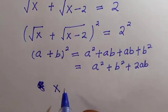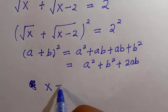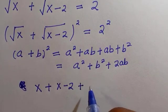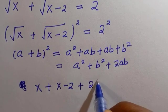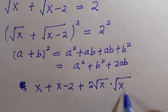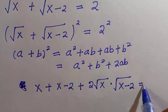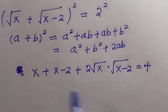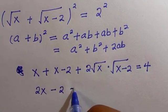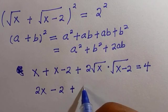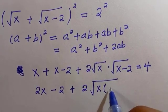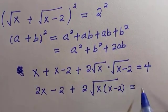Since a equals root x, then a squared equals x. Similarly, b squared equals x minus 2. So the expansion becomes x plus x minus 2 plus 2 times root x times root x minus 2, and this equals 4. That simplifies to 2x minus 2 plus 2 root of x times x minus 2 equals 4.